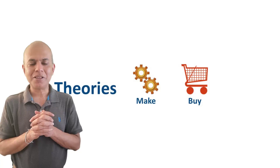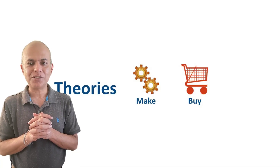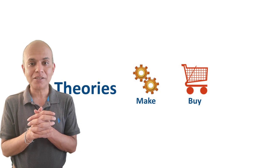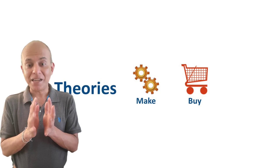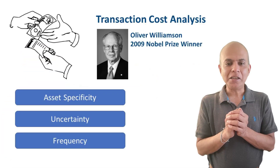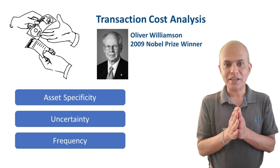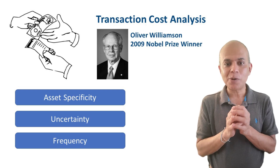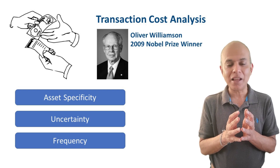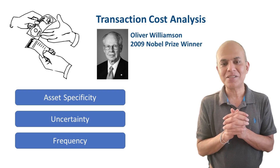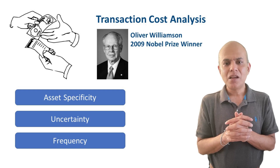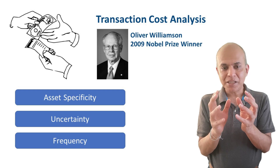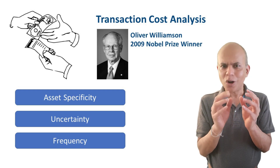Welcome to this second video in the series of configuration decisions. Here we are going to talk about the two major theories which help us make the make-or-buy decision. The first theory is something we call transaction cost analysis or transaction cost theory, and in its present format was given to us by Williamson, who received a Nobel Prize for this theory in 2009.